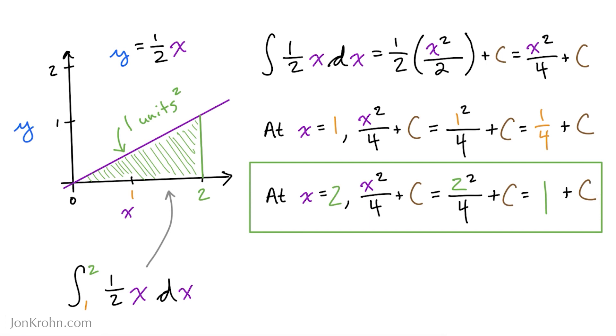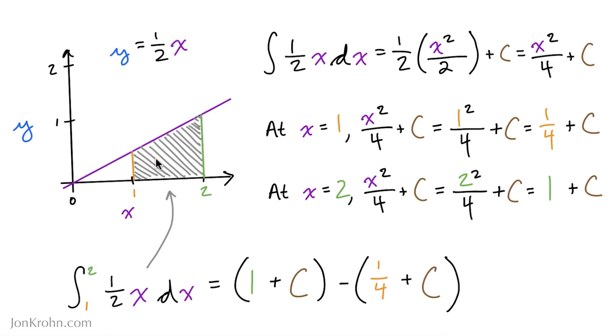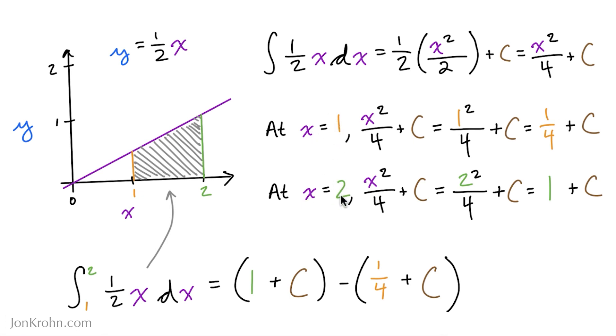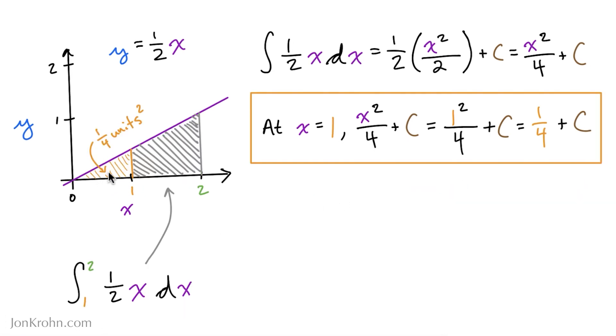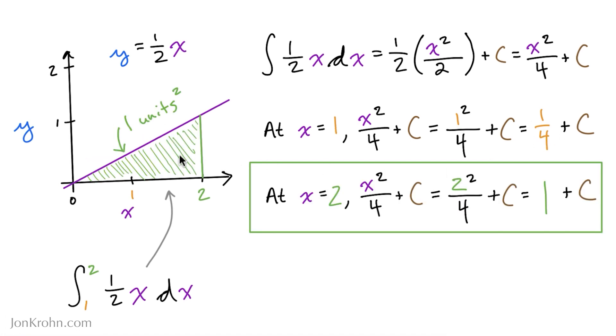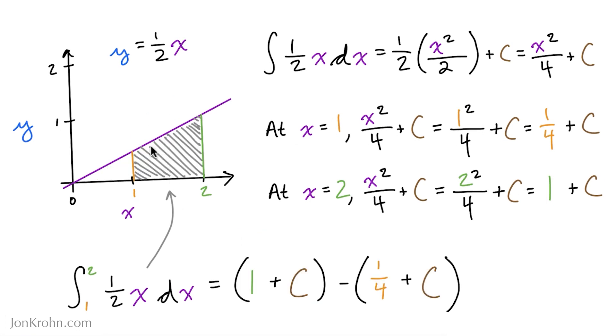Now, here's where things get really interesting. So if we want to find the area in this section here, well, we can use the areas that we just calculated. So substituting in 1 for x and 2 for x, respectively, we just found out that this area under the curve is a quarter of a squared unit. And this area is 1 squared unit. So to find this area here, we can simply subtract the smaller area from the larger one. And that will leave us with the area of this part of the curve.